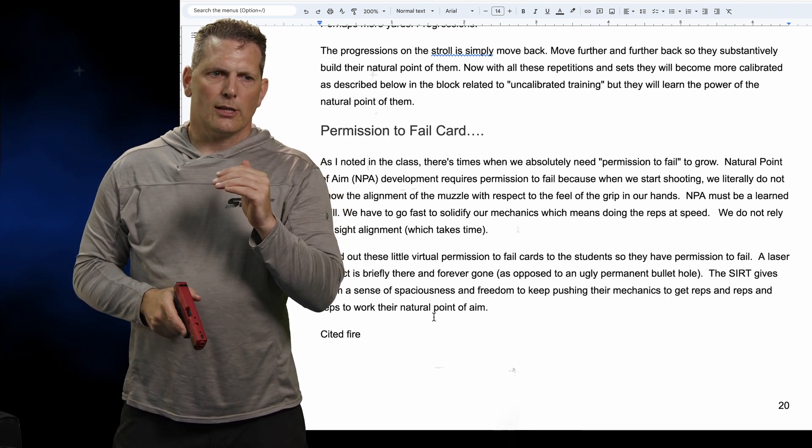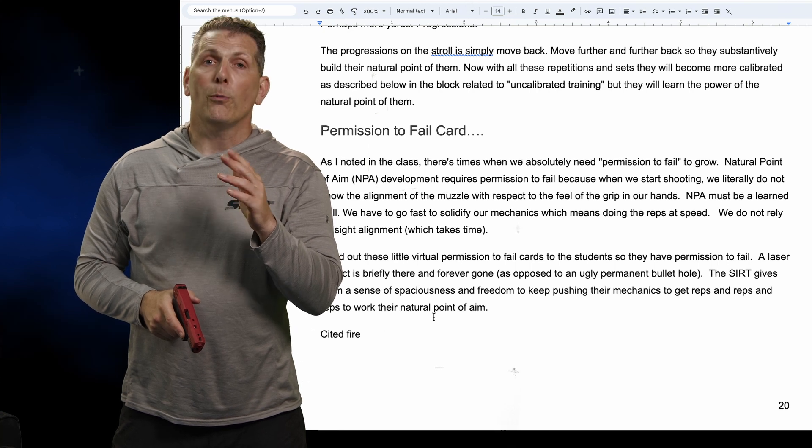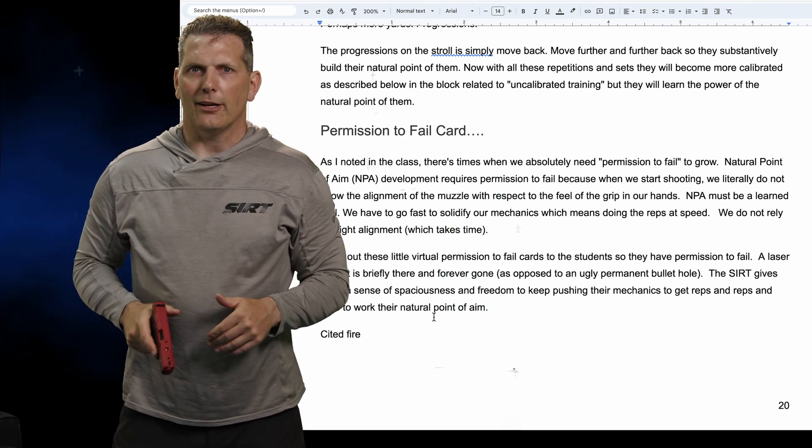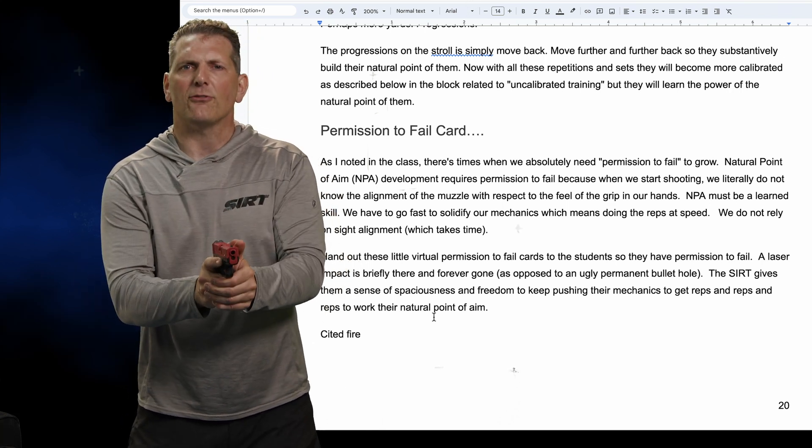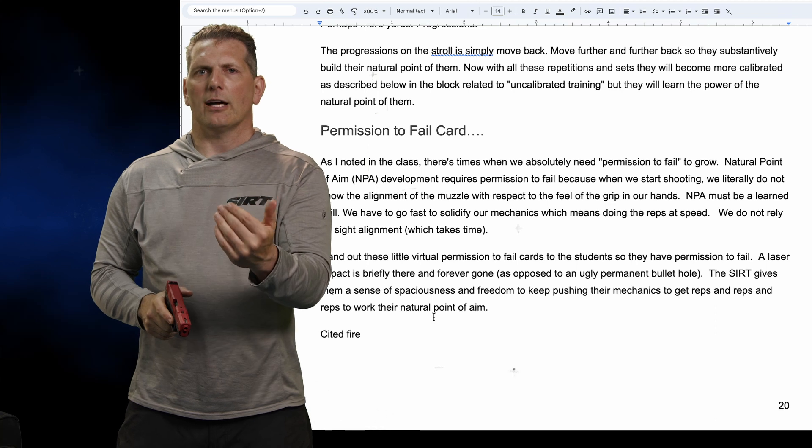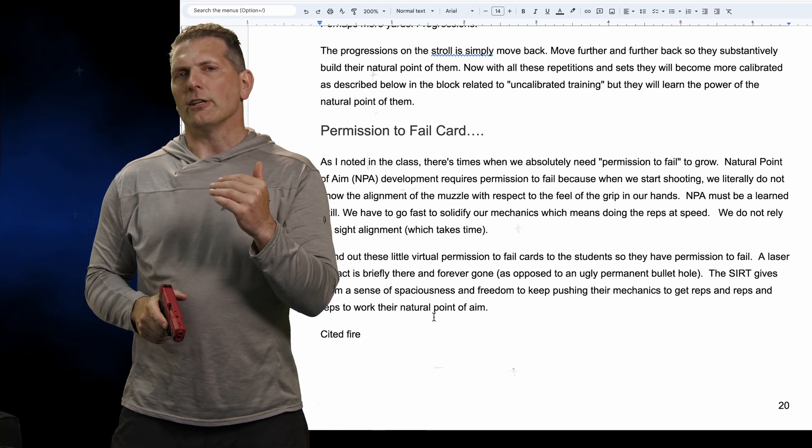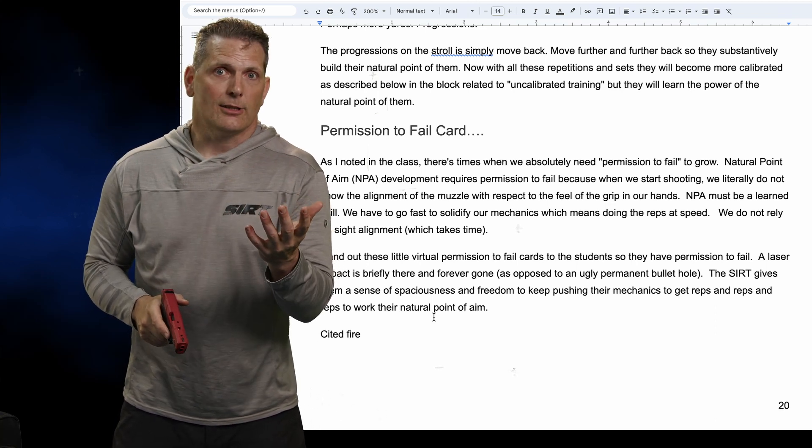Natural point of aim is more akin to an open loop where you just send it. You just align it and you send it. You're not getting a lot of feedback. You're getting some feedback with feel, but it's not a lot of alignment, not a lot of feedback. Hence, it's fast.